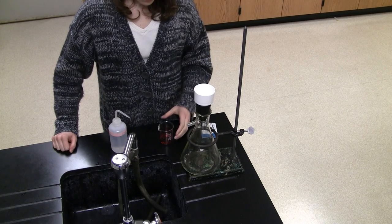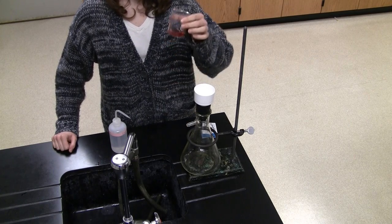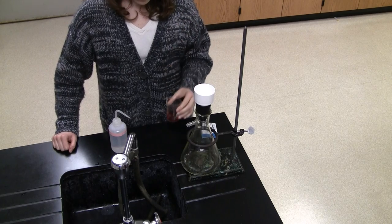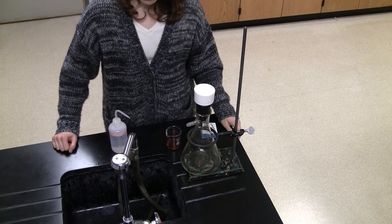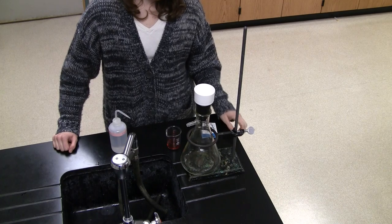A filtration flask and Buchner funnel are used to separate solids from liquids. You'll find these already set up for you near the sinks. To begin, make sure both the flask and funnel are empty and clean.